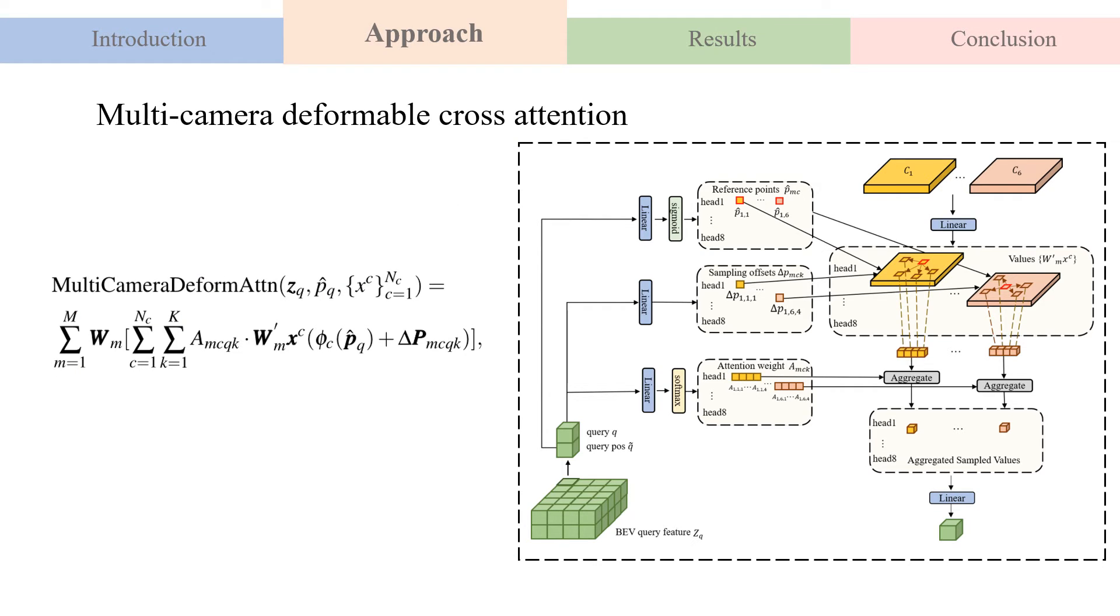Specifically, for each BEV query, we apply a learnable linear projection layer on its position embedding to obtain the 2D coordinate of reference points, and then use the sigmoid function to normalize these coordinates.